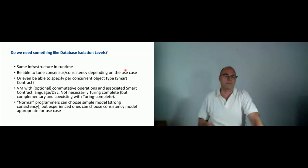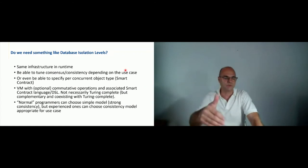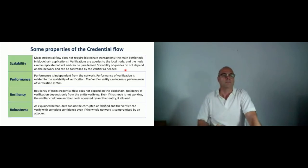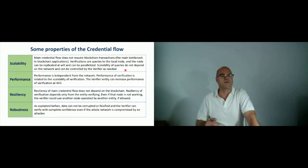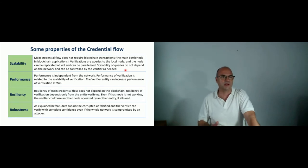In the ideal world, normal programmers can choose a simple model with strong consistency because it is easy to reason about, but experienced ones can choose the consistency model appropriate for the use case — basically the same thing that happens with databases: relational databases with strong consistency or NoSQL databases with eventual consistency. For example, with eventually consistent systems we have incredible scalability because the main credential flow does not require blockchain transactions, incredible performance because it's independent from the network, incredible resiliency because it doesn't depend on the blockchain once credentials have been issued, and incredible robustness — and this is achievable for most of the use cases we really need in the real economy.